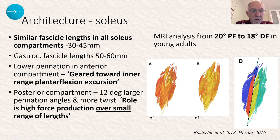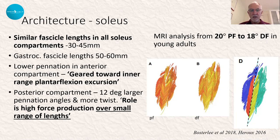Whereas the posterior compartment, which is around 80% of the overall cross-sectional area of soleus, has larger pennation angles and more twist. It appears to be geared much more towards high force production over small ranges of length.